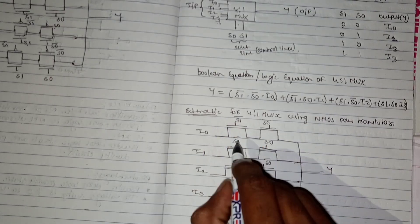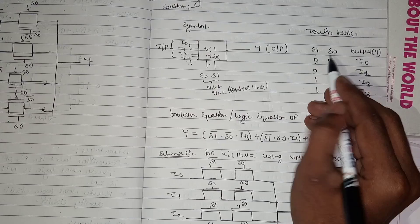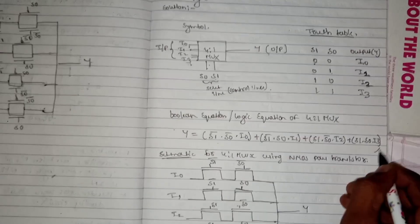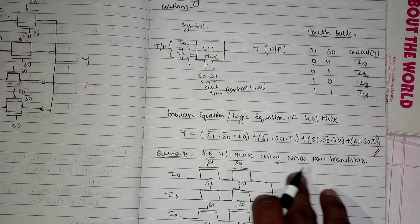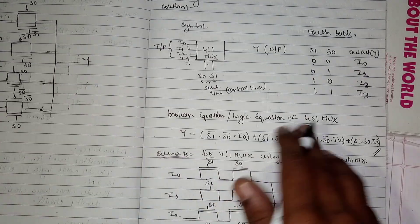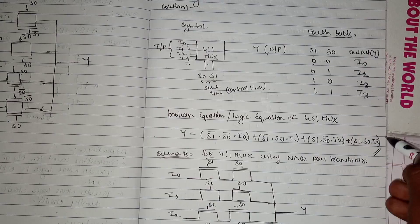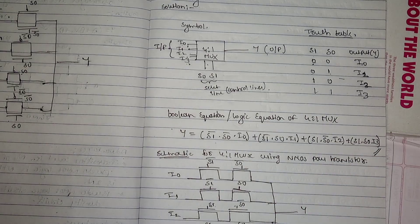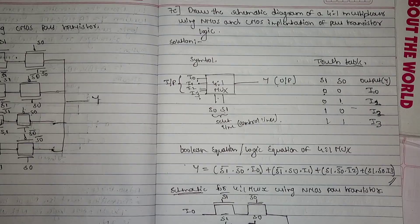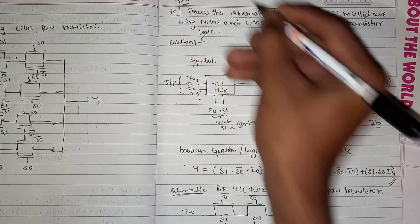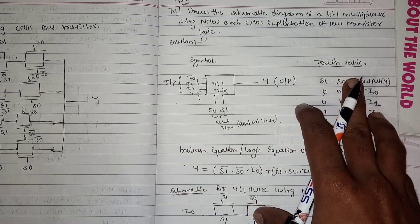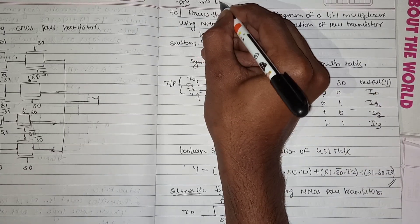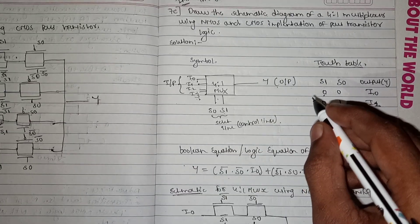This is the schematic for the CMOS pass transistor implementation — it is easy but try to understand before writing. To recap: this is the NMOS pass transistor schematic for the 4-to-1 MUX, the truth table is very important, as is the Boolean equation — if you remember the Boolean equation you will be able to draw both schematics. This question will surely be asked in the examination for 8 or 10 marks.